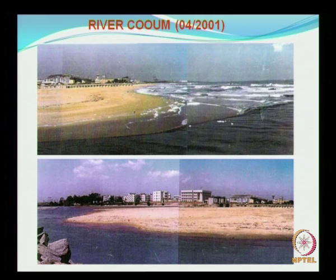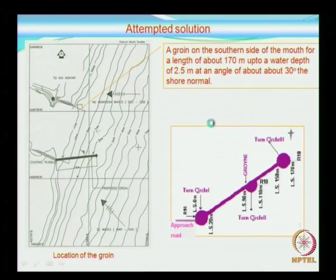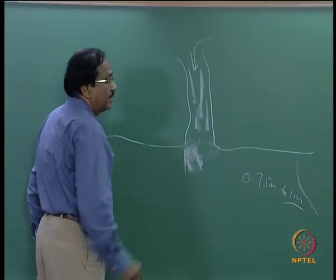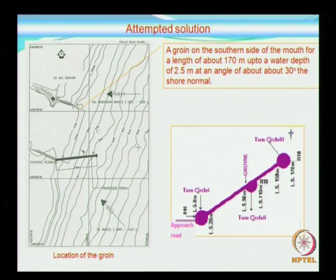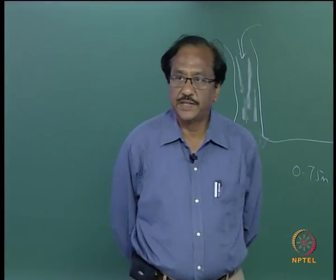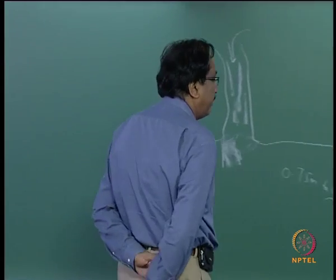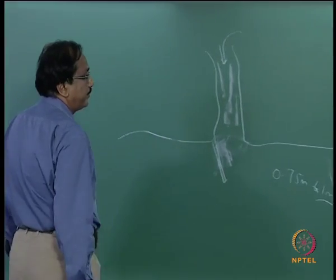The sandbar also starts very close to this location. A groin on the southern side of the mouth, of length about 170 meters up to a depth of about 2.5 meters at an angle of about 30 degrees, was proposed as you can see here. The curved end is for the vehicle which carries the boulders to turn, nothing else.